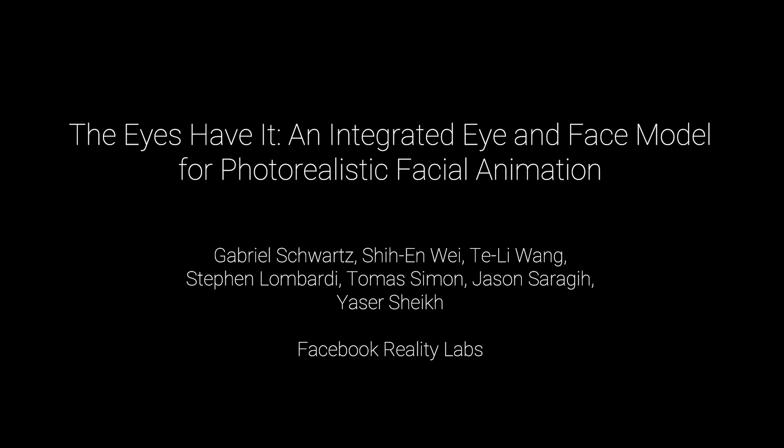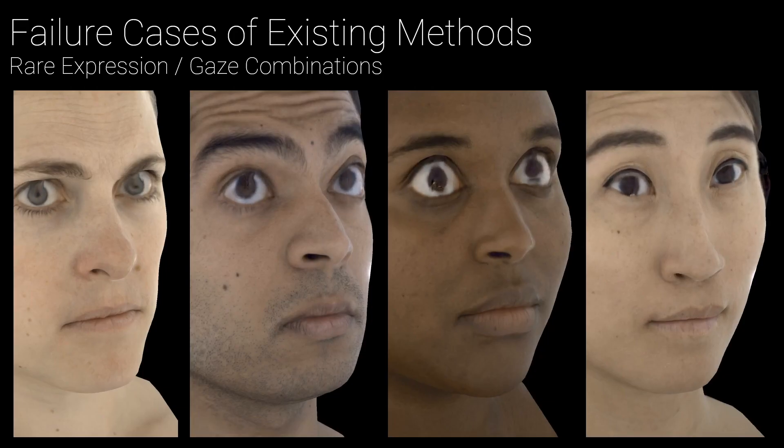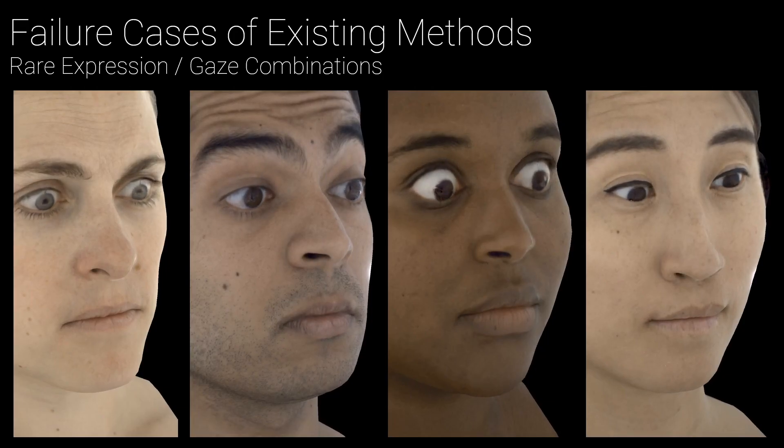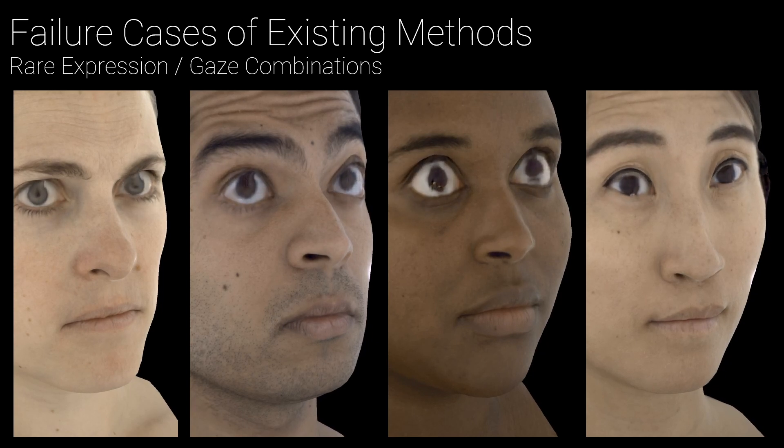We propose a complete system for building a photorealistic 3D virtual avatar with precise and independent control over the avatar's gaze. Here we show that existing deep appearance models fail to generalize the avatar's appearance to new gaze directions and rare expressions.